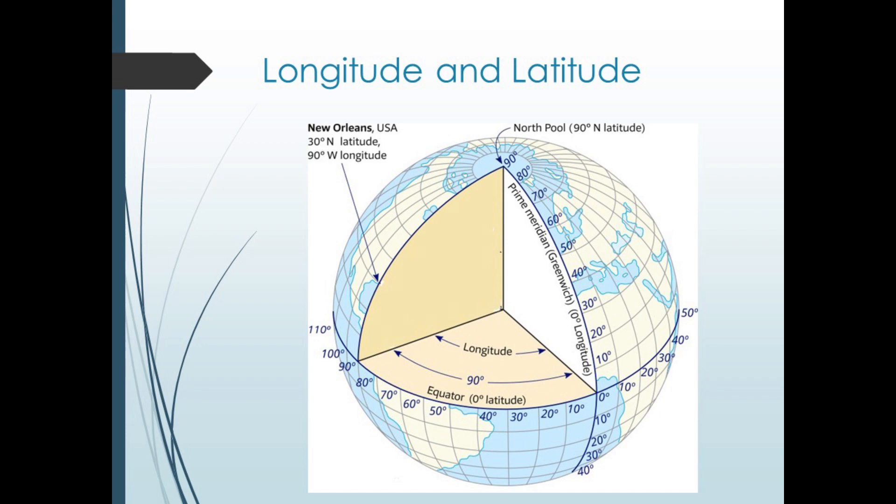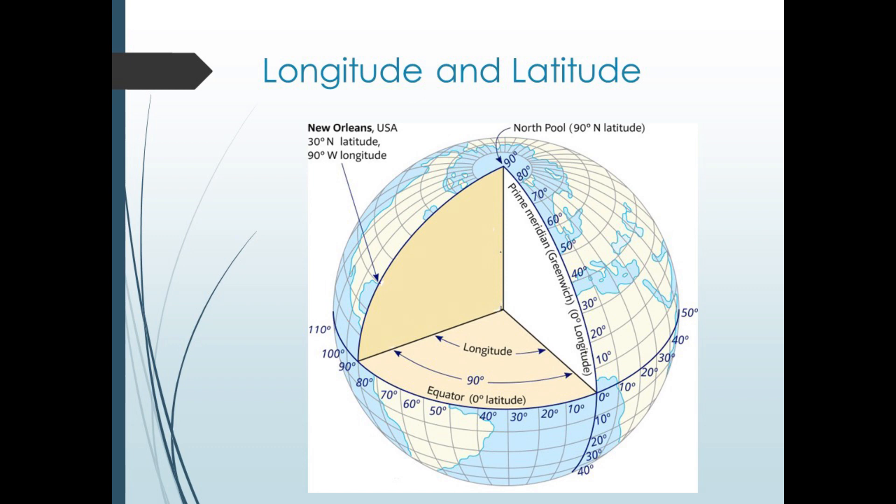Putting these together, we get a grid system that surrounds the Earth. You can see here where we specify the location of New Orleans in America as having a longitude 90 degrees west of the prime meridian and a latitude 30 degrees north of the equator. We don't need to state which is latitude and longitude since it's implied by the east-west or north-south attached to the measure.